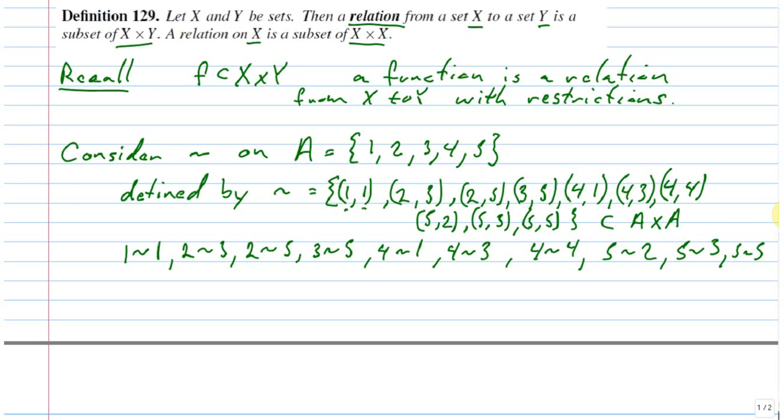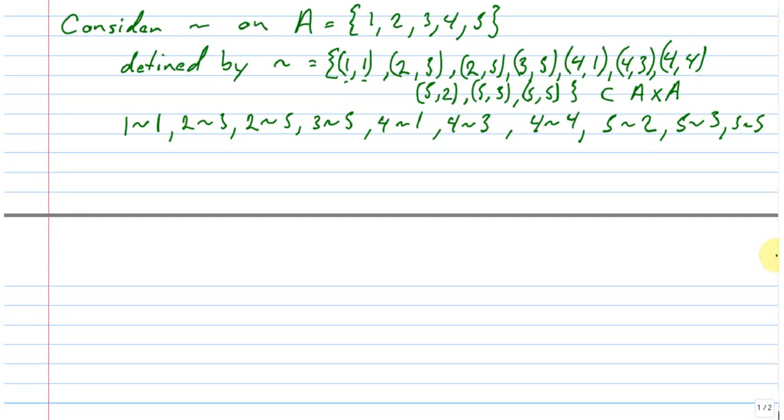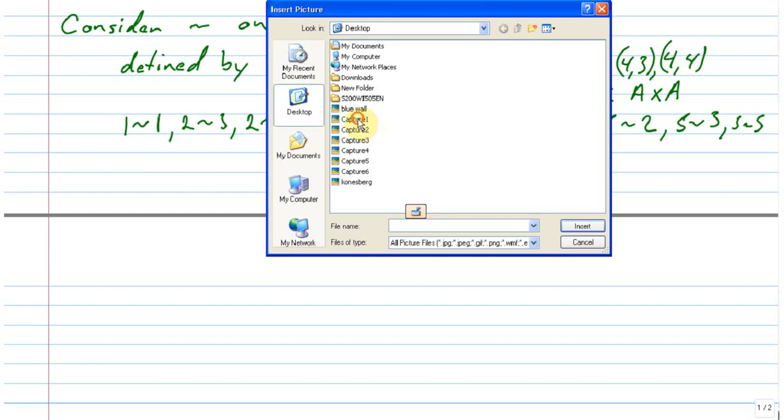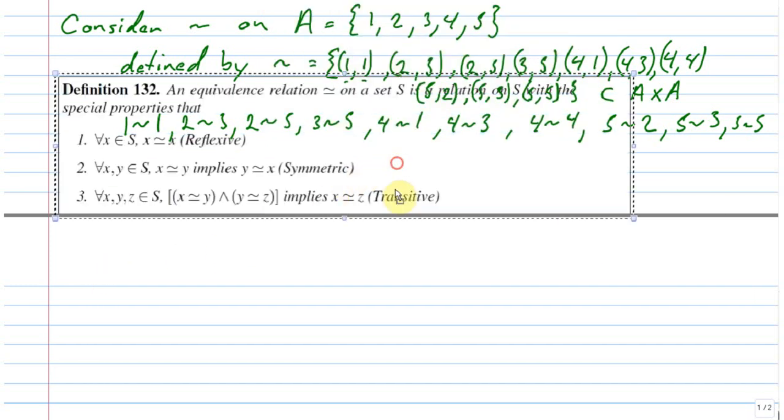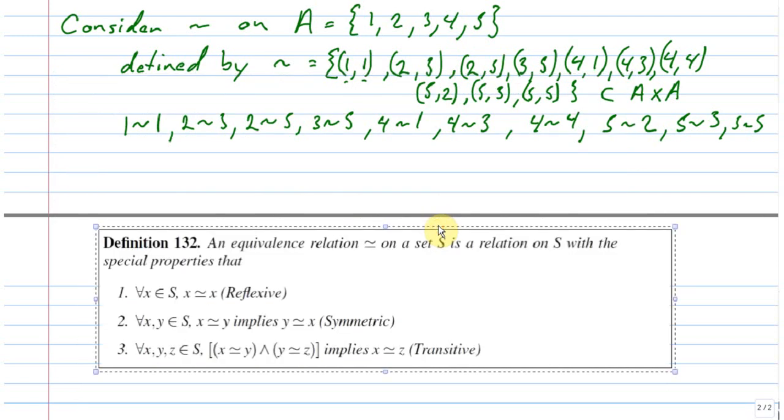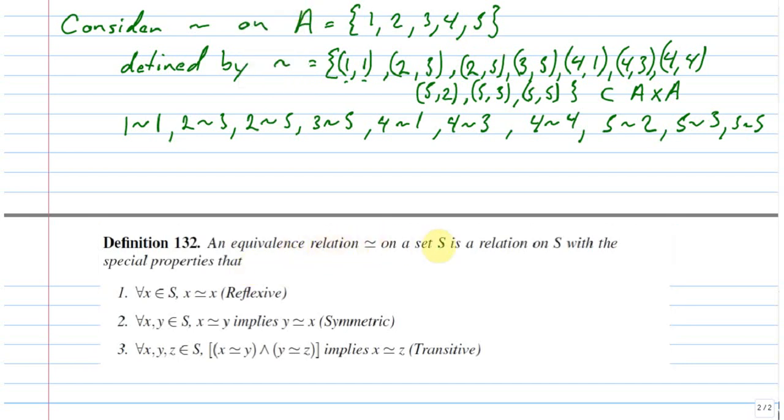In fact, any subset of the product gives you a relation. Generally speaking, we only want to consider relations that have specific properties. So a really big idea in mathematics is that of an equivalence relation. An equivalence relation is a relation, first of all, that meets certain conditions. So it's a subset of the product, and for all X in S, for all X in your subset of the product, each element has to be related to itself. This is called reflexivity.